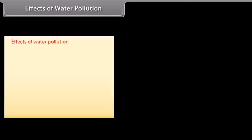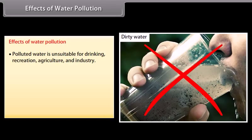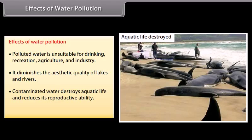Polluted water is unsuitable for drinking, recreation, agriculture, and industry. It diminishes the aesthetic quality of lakes and rivers. Contaminated water destroys aquatic life and reduces its reproductive ability. It is also hazardous to human health.